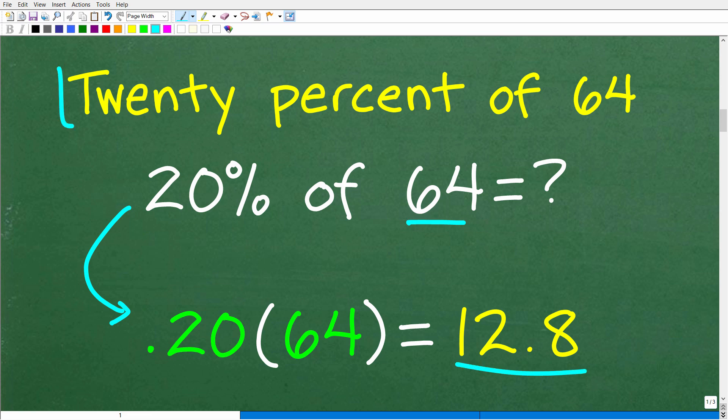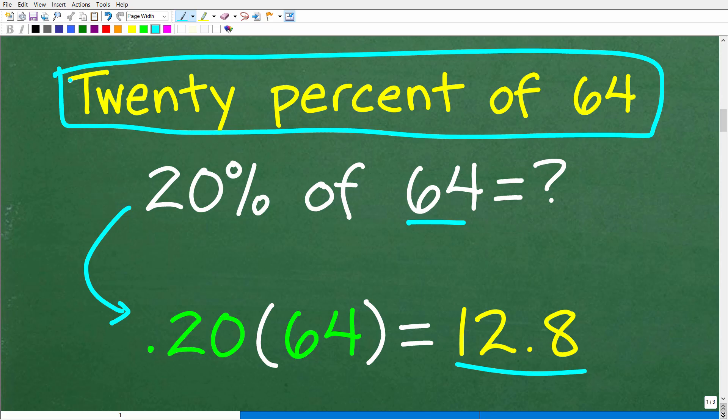So 20%, as a decimal, is 0.20, and then we're just simply going to multiply by this number. So 0.20 times 64, using our calculator, is 12.8. So this part of the problem right here, 20% of 64, we can just get rid of that and put in a 12.8.